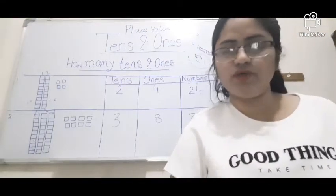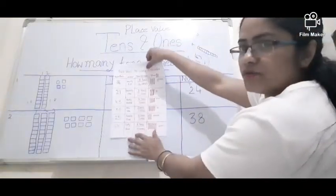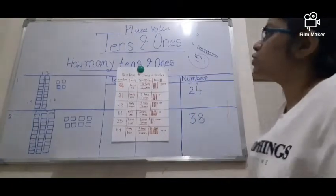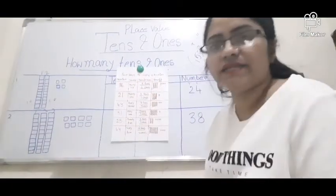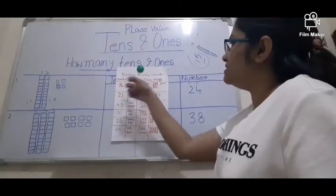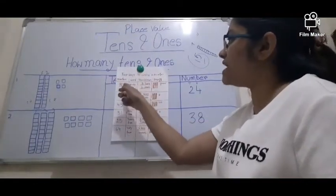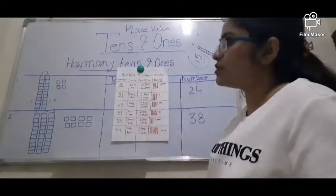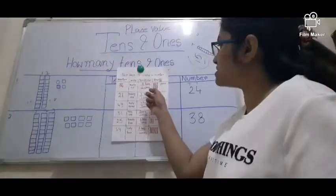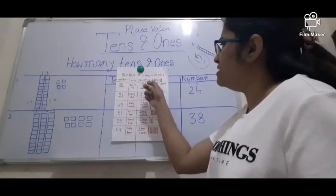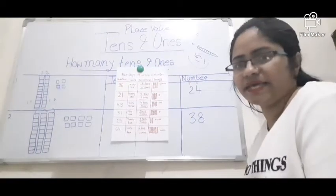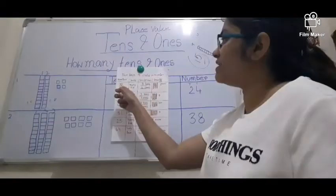Now I can show you a worksheet — 4 ways to write a number. Here the number is 36. In word form: thirty-six. In 10s and 1s: 3 tens and 6 ones. To draw it, I draw 3 separate groups of 10 blocks each, and 6 single blocks. Next: 21 — in word form: twenty-one. In 10s and 1s: 2 tens and 1 one, so 2 groups of 10 blocks and 1 single block.